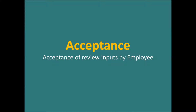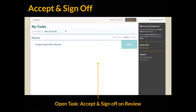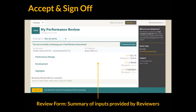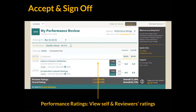In Grosome you can set up the review process to complete with an acceptance procedure, where the employee reviews the inputs given by managers and formally agrees by signing off on the tool. Once review and moderation has happened, the form travels back to the employee for acceptance. When the employee logs on to Grosome, they see that one of their open tasks is to accept and sign off on the review. Here the employee can see the different form sections and a summary of the inputs provided by the managers, and can view the reviewer's ratings and various inputs by going to each form section.